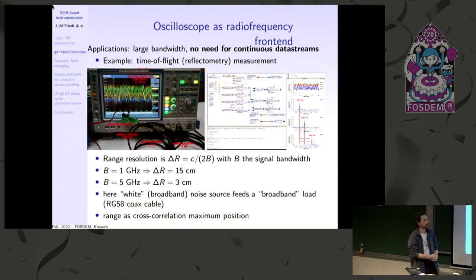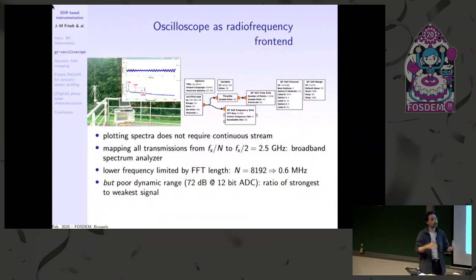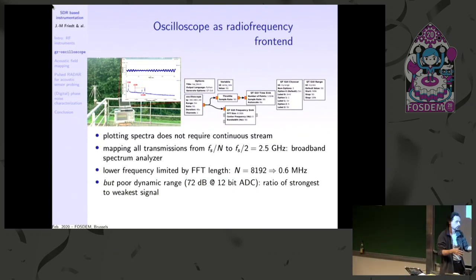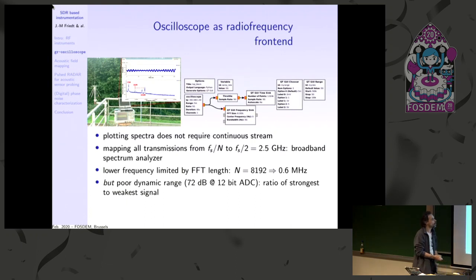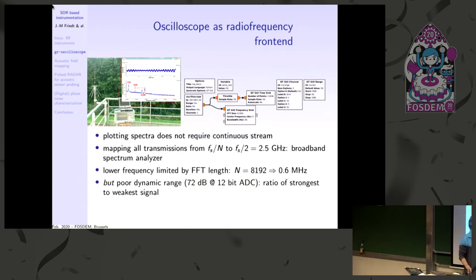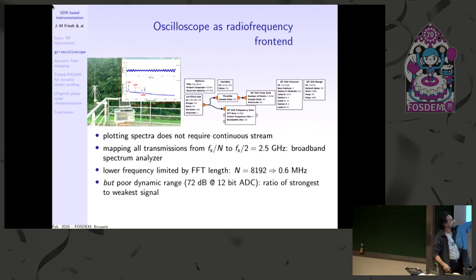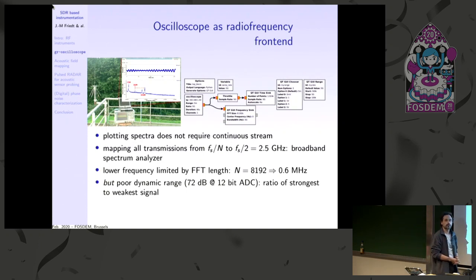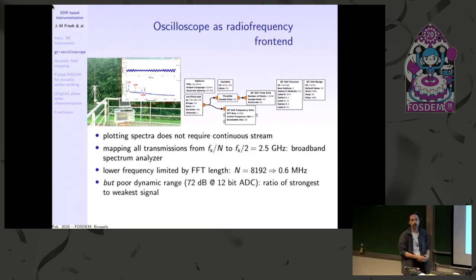Another application not requiring continuous streaming is spectrum display: you just want to know what is being transmitted on a channel without decoding it. The upper frequency limit is the oscilloscope bandwidth; the lower limit depends on FFT size. For example, a 2.5 Gsps oscilloscope with an 8000-point FFT gives a lower limit around 600 kHz. A key drawback of RF oscilloscopes used as SDR front ends is low bit depth — nominally 12 bits but practically around 10 ENOB — which limits the dynamic range between the strongest and weakest detectable signals.